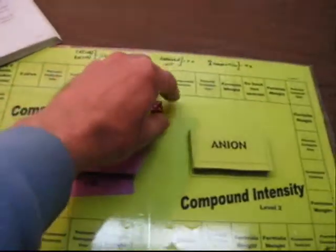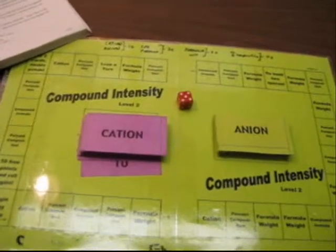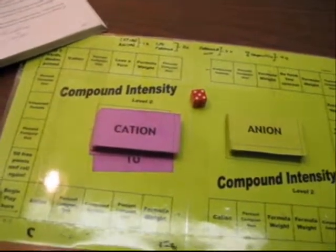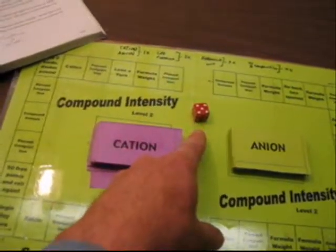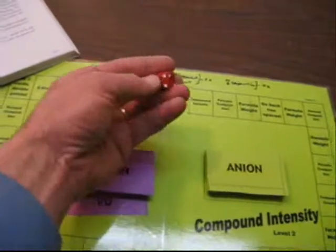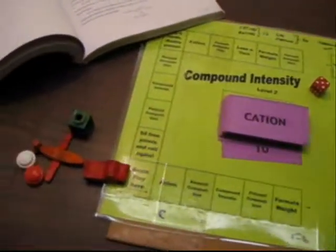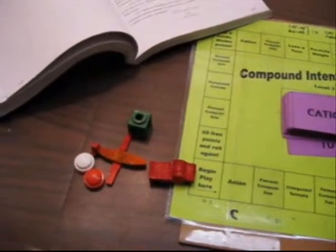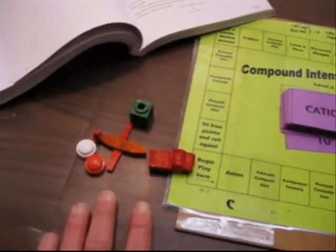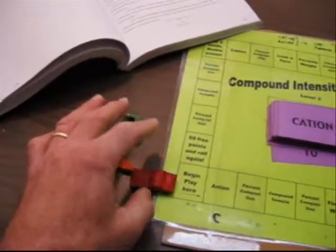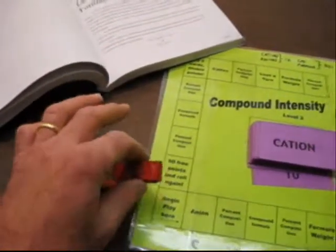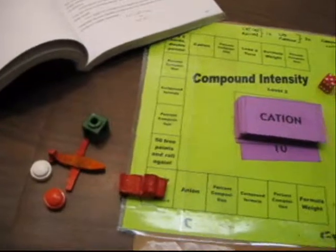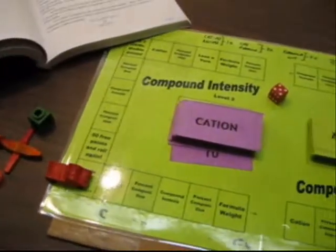You'll also need a dice. In one of the early first pages of your manipulative set, there is a little pattern you can cut out and you can build your own dice or any sort of spinner or dice works. You'll need some playing pieces for the teams or for your students to play with. These can be any small little objects that you might find just so that each team has their own marker, their own playing piece.